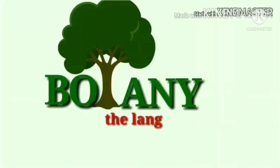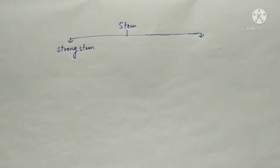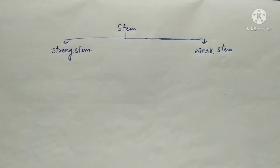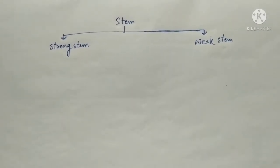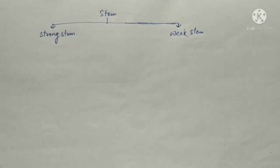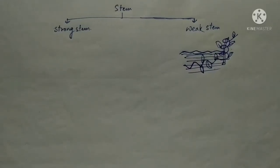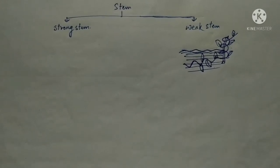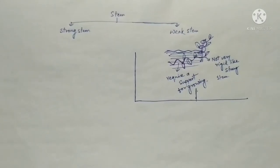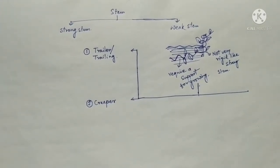Welcome to Botany: The Language of Plants. Today's topic is about types of weak stem. We know that stems are of two types: strong stem and weak stem. Weak stems are not independent — by the help of some plants or any object, they climb up or grow up from the soil. Weak stems are divided into three types: trailer or trailing, creeper, and climber.